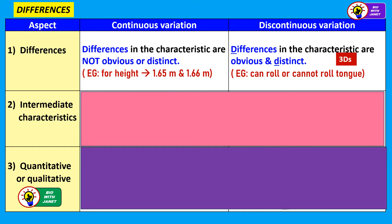Now let's look at the differences. Firstly, for continuous variation, the differences in characteristics are not obvious or distinct — they exist on a spectrum. For example, for height of humans, two people may look like they have the same height, but one may actually be 1.65 metres and the other 1.66 metres, so the difference is not obvious. For discontinuous variation, the differences are very clear-cut and distinct. When you look at a person, you can tell whether he can or cannot roll his tongue — it's very obvious.